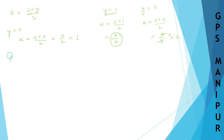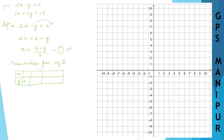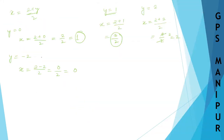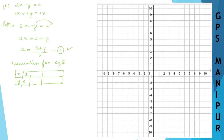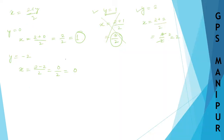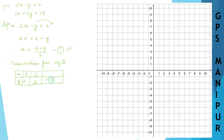Let us try y is equal to minus 2. x will be 2 minus 2 divided by 2, which is 0 divided by 2, so x is 0. So summarizing the table: when y is 0, x is 1; when y is 2, x is 2; and when y is minus 2, x is 0.